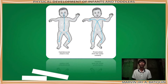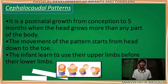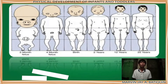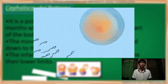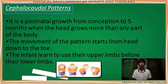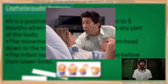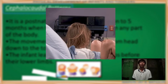These two trends, or patterns, help us know the proper growth of a human body. The first is the cephalocaudal pattern. It is a postnatal growth from conception to five months, when the head grows more than any other part of the body. Postnatal means after birth. Conception means when the sperm cell and egg cell combine to form a new organism — the baby. The development starts from conception through after birth and ends when a baby becomes five months old.